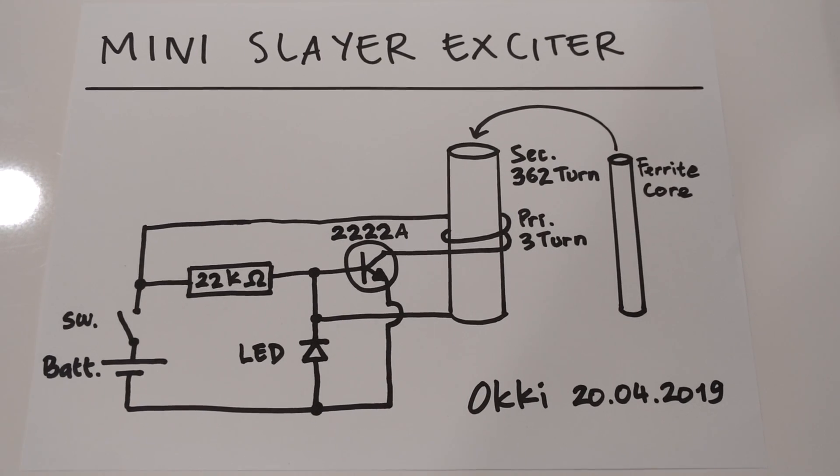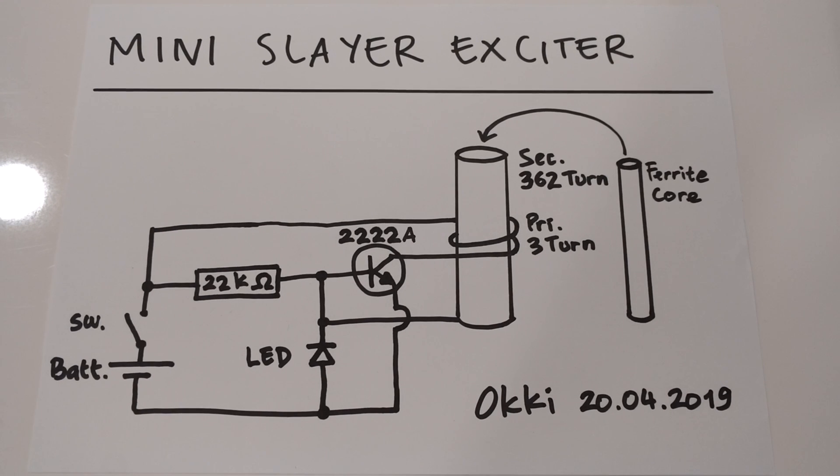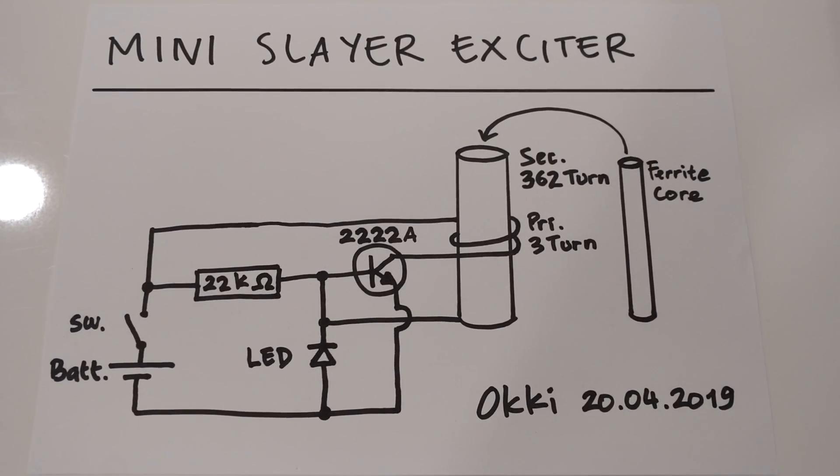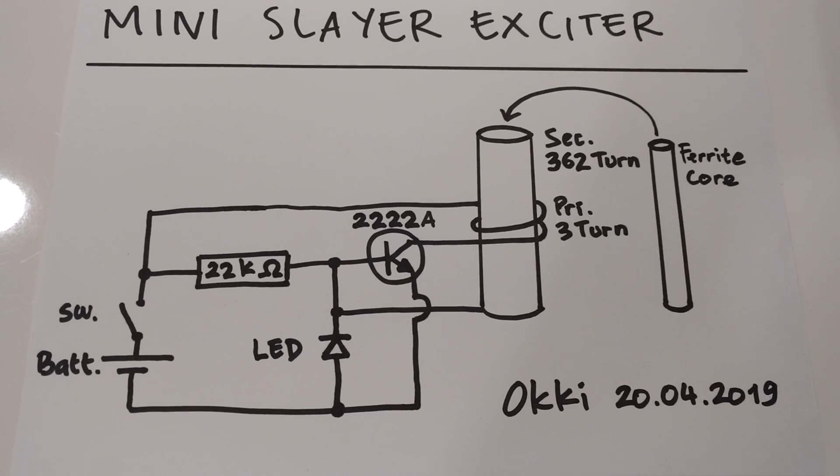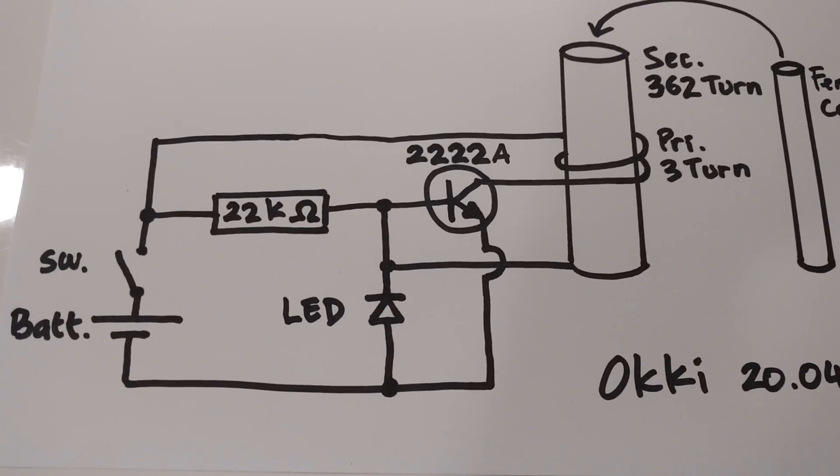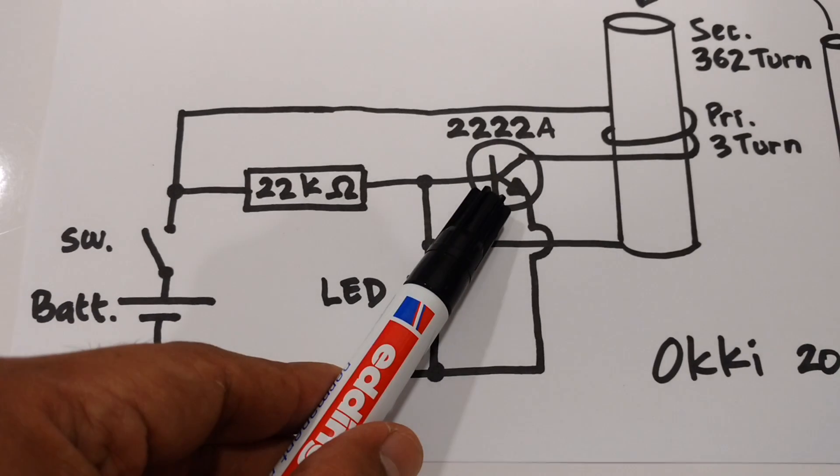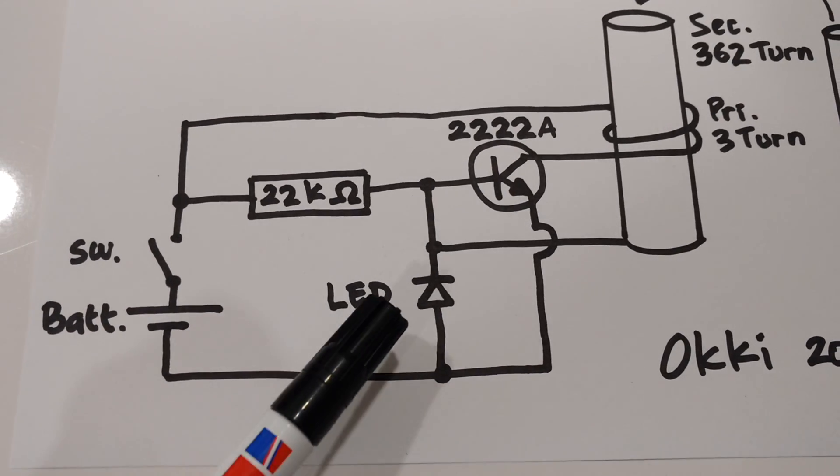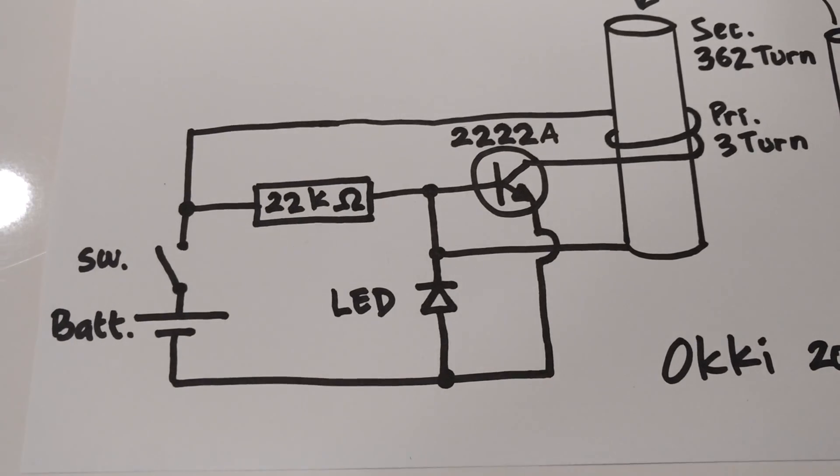Assalamualaikum warahmatullahi wabarakatuh. Today I want to show you my Mini Slayer Exciter. This circuit is very simple. It has only three components: one transistor, one LED, and one resistor.